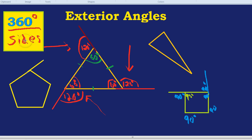What do we do? We do 360 divided by the number of sides. In this case, 360 divided by 5 because a pentagon has 5 sides. That will give us this angle here, which is the exterior angle, exterior because it's on the outside.